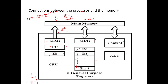The Program Counter holds the address of the instruction to be executed, and this address is transferred to the MAR. A read control signal is then sent to the main memory. After the required time gap, the instruction at that address is read out of memory and loaded into the MDR.